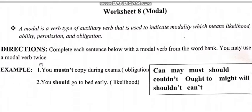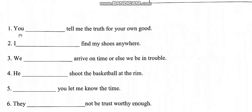Directions: complete each sentence below with a modal verb from the word bank. You may use a modal verb twice. Example: 'You mustn't copy during exams' — this is obligation. 'You should go to bed early' — this is likelihood. Word bank: can, may, must, should, couldn't, might, will, shouldn't, can't.